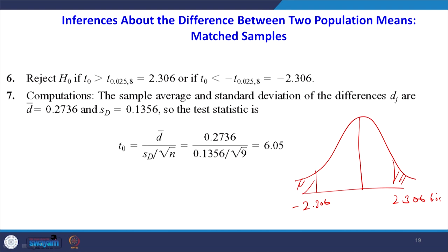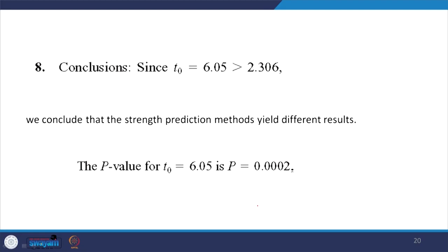Rejecting the null hypothesis that mu 1 minus mu 2 equals 0 means H1 — mu 1 minus mu 2 not equal to 0 — is supported. Similar to a hair oil example, if we reject the null hypothesis, we conclude there is an effect. We conclude that the two strength prediction methods yield different results. Finding the p value from a statistical t table is difficult, but we can use Python to determine it.